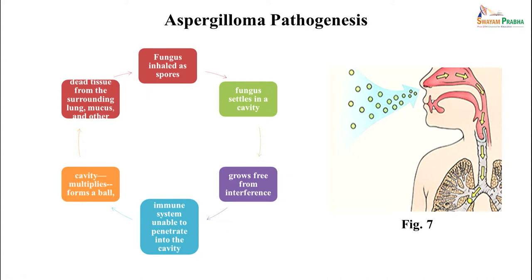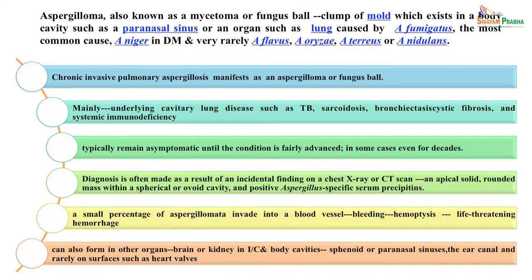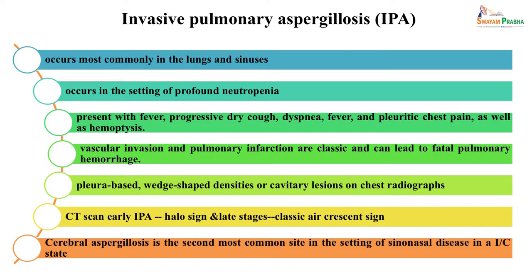Aspergilloma forms when inhaled fungal spores settle in a pre-existing cavity, where they grow freely since the immune system cannot penetrate the cavity, multiply, and form a ball. It can present asymptomatically or alongside underlying diseases like TB. Invasive aspergillosis most commonly occurs in the lungs and sinuses in a setting of neutropenia. Patients present with fever, cough, chest pain, hemoptysis, and wedge-shaped or cavitary lesions on imaging. If invasive, it can disseminate to different organs.